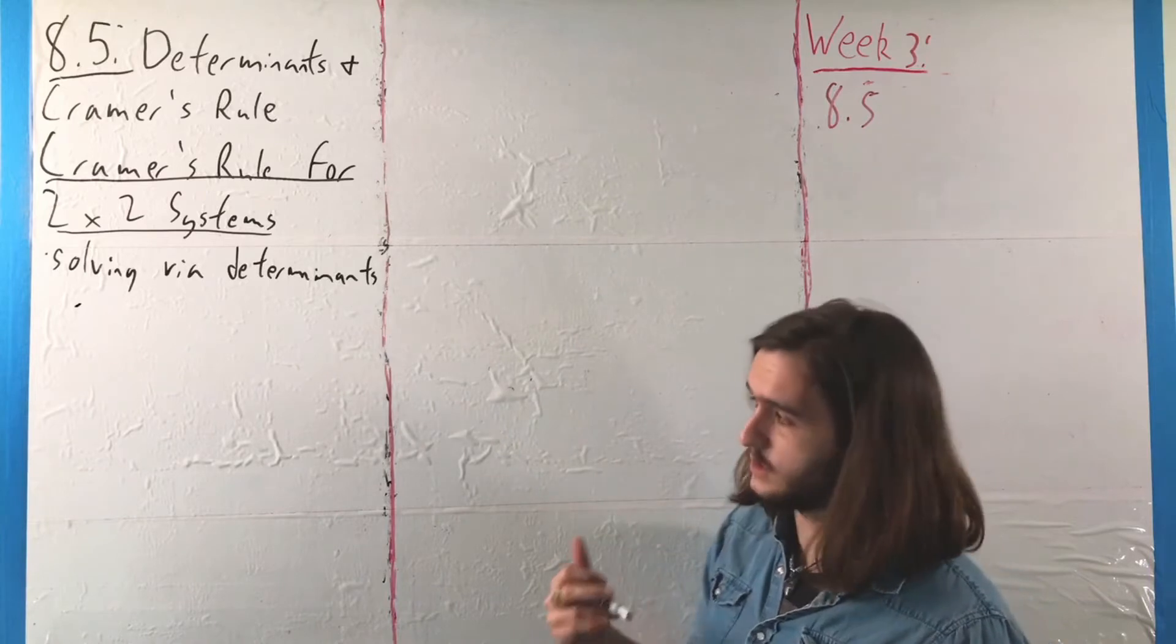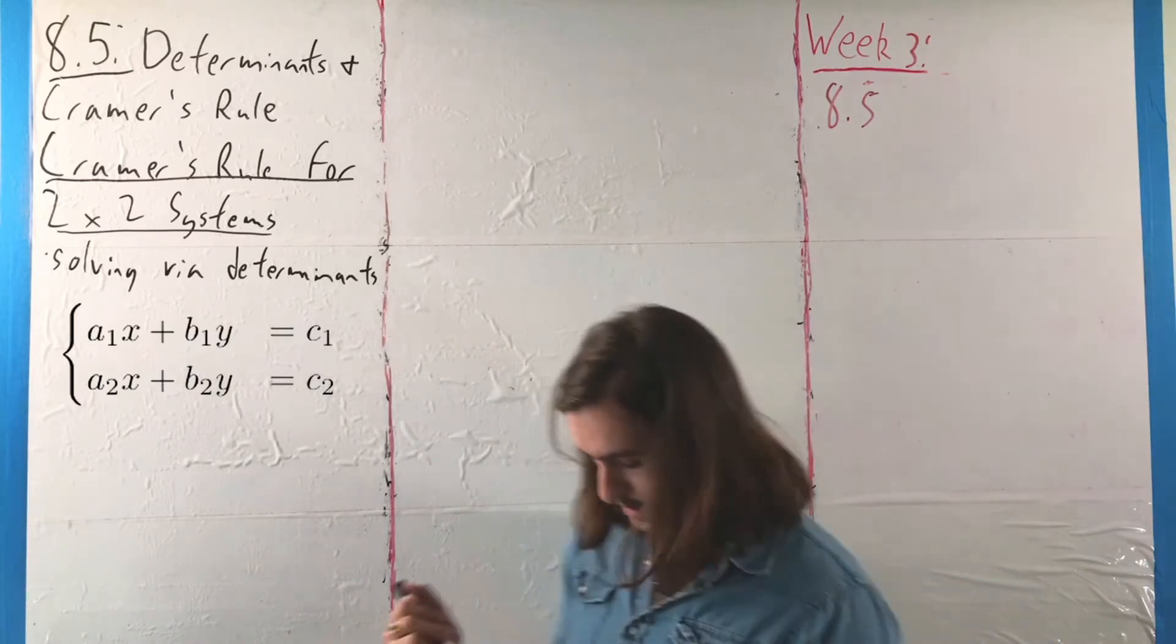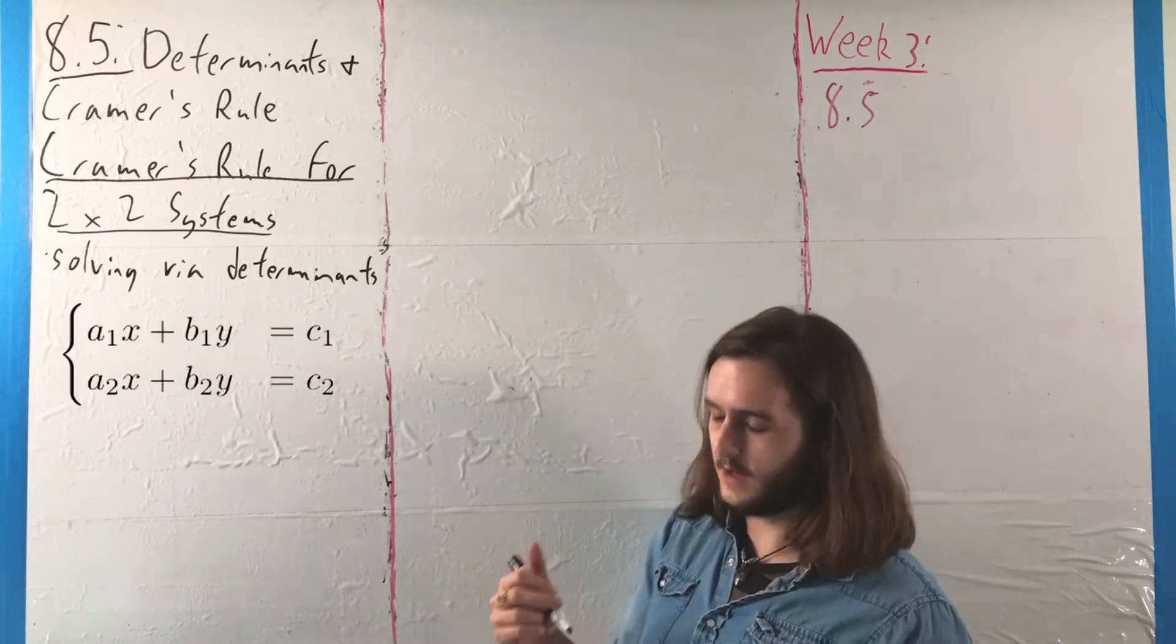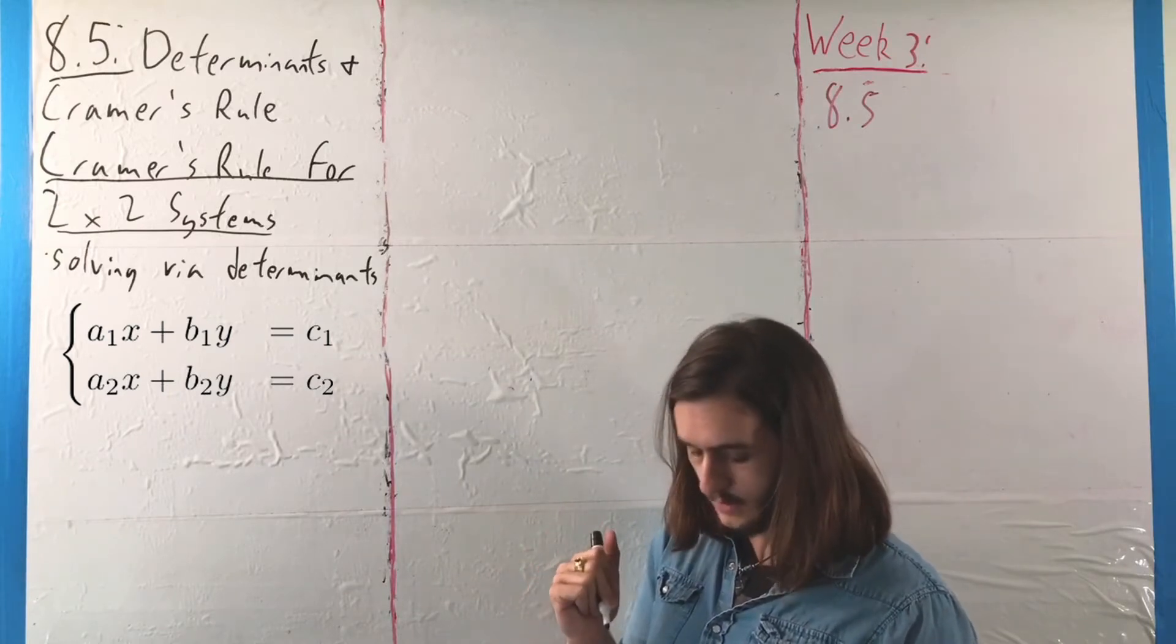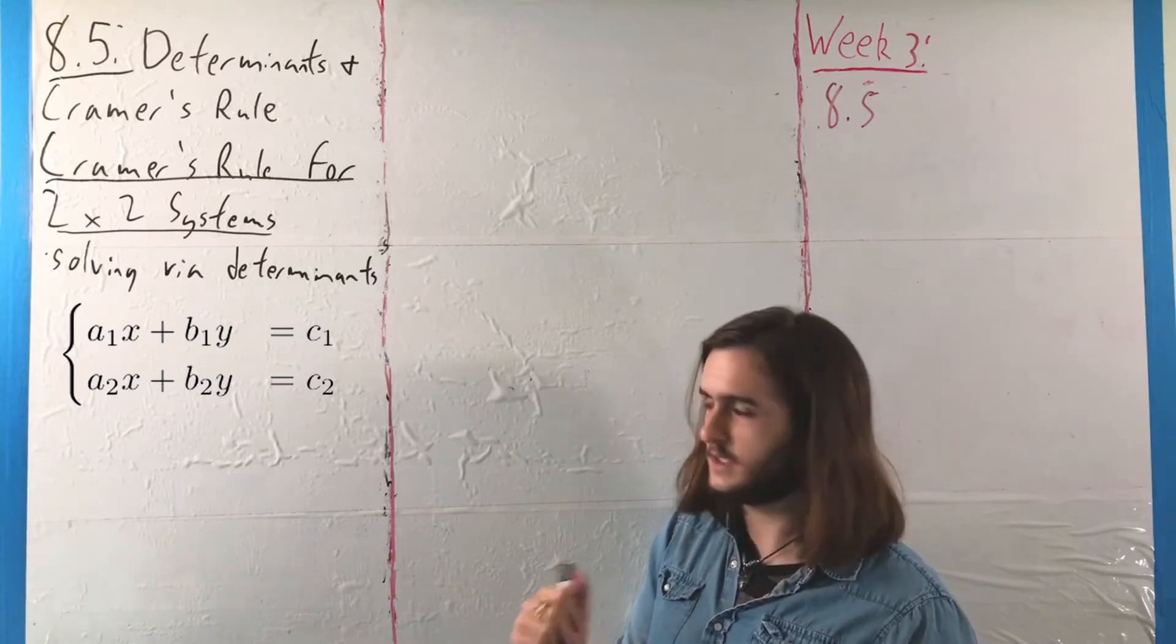For this, what we're going to do is start with our general system: A1x plus B1y equals C1, and A2x plus B2y equals C2.